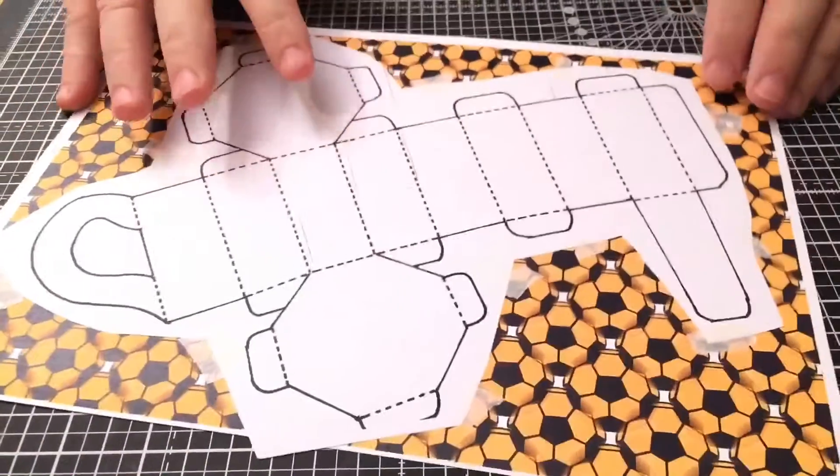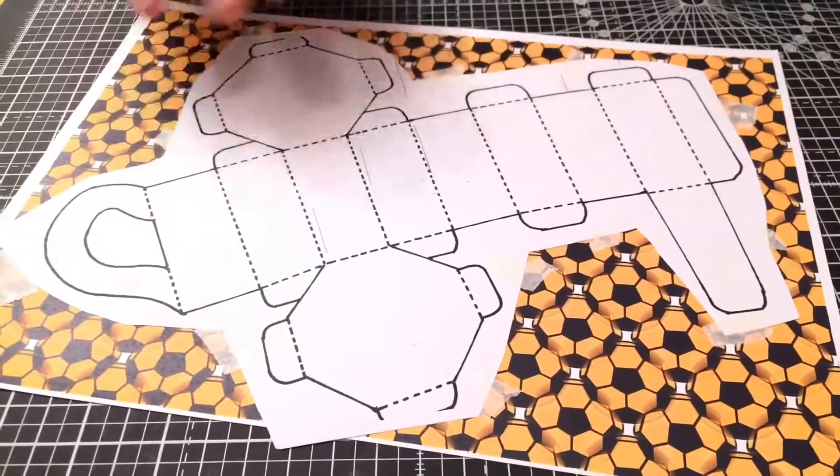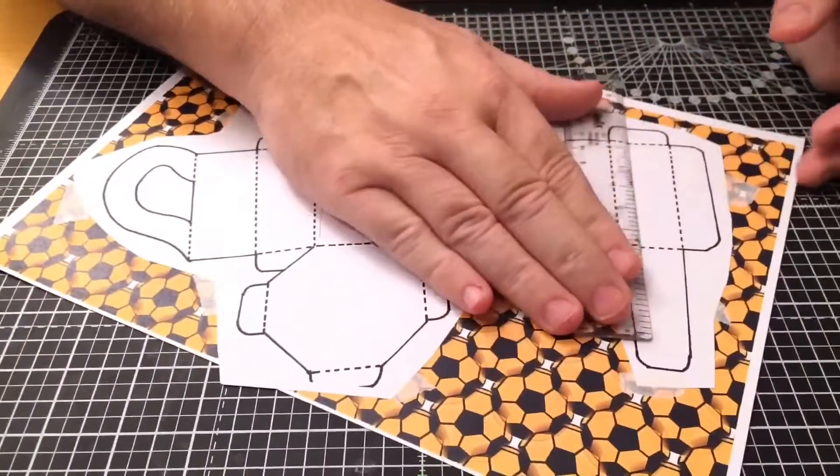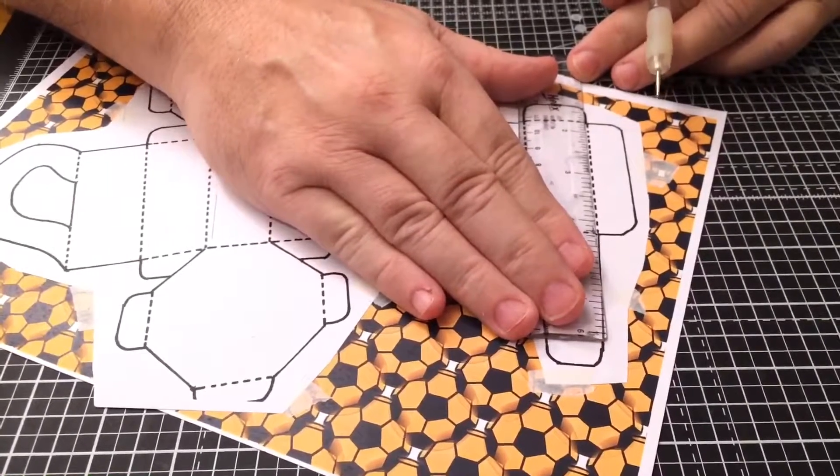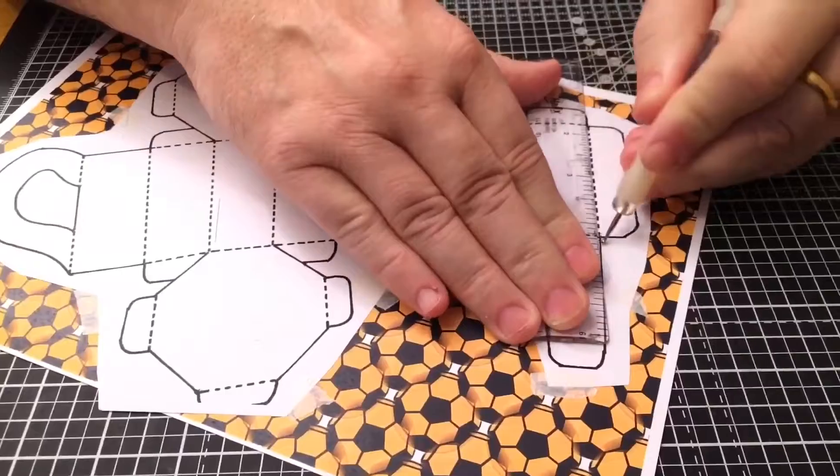The first thing I'm going to do before cutting it out is score through all the dotted lines, so that when it comes to bending them, they bend easily.